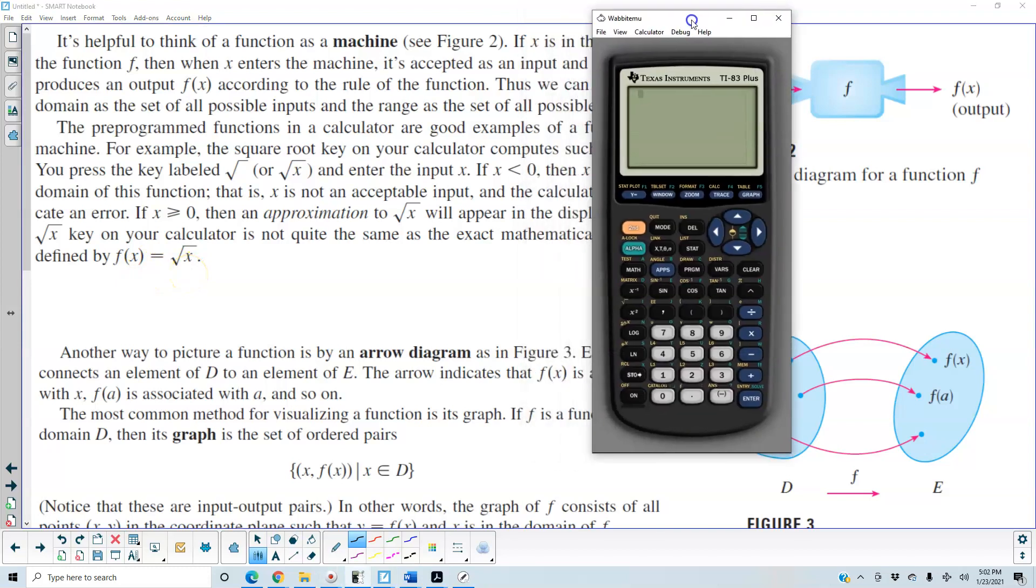So let's just quickly see this on the calculator. If I take the square root of a number that's less than 0 we're going to put in let's say negative 1. We're going to get a non-real answer. That means it's not in the domain. Now if we decide to take the square root of let's say 3 then we're going to get an approximation.